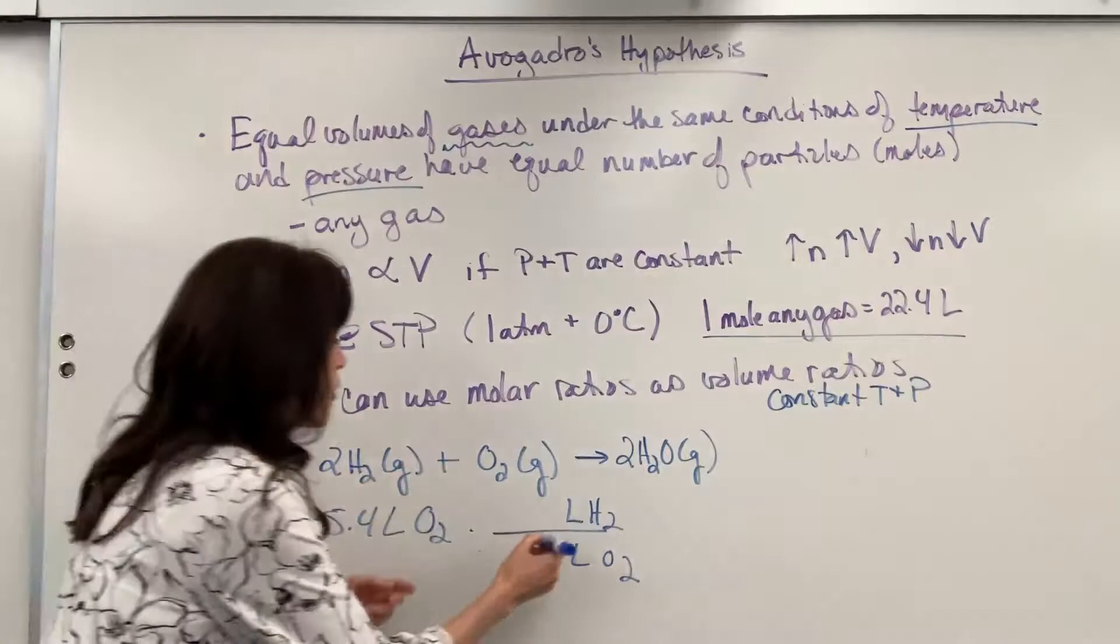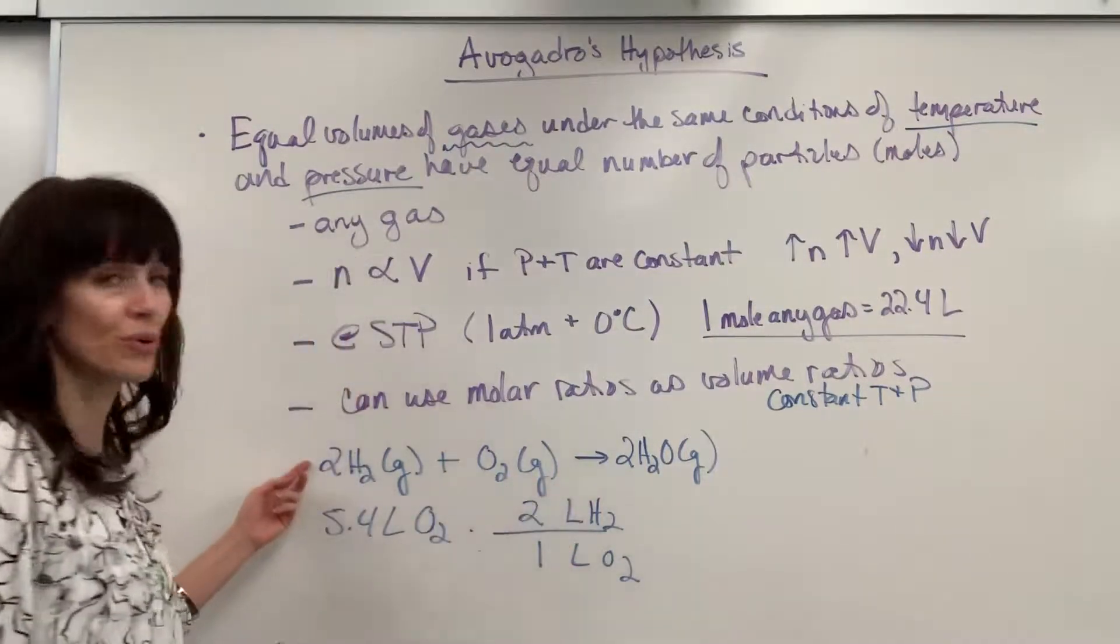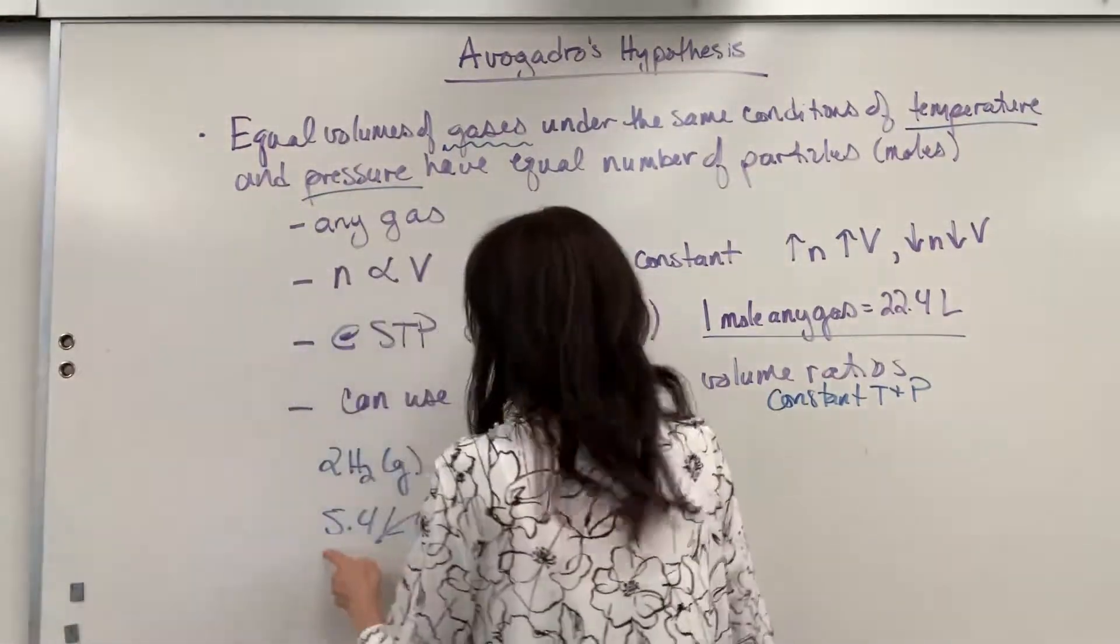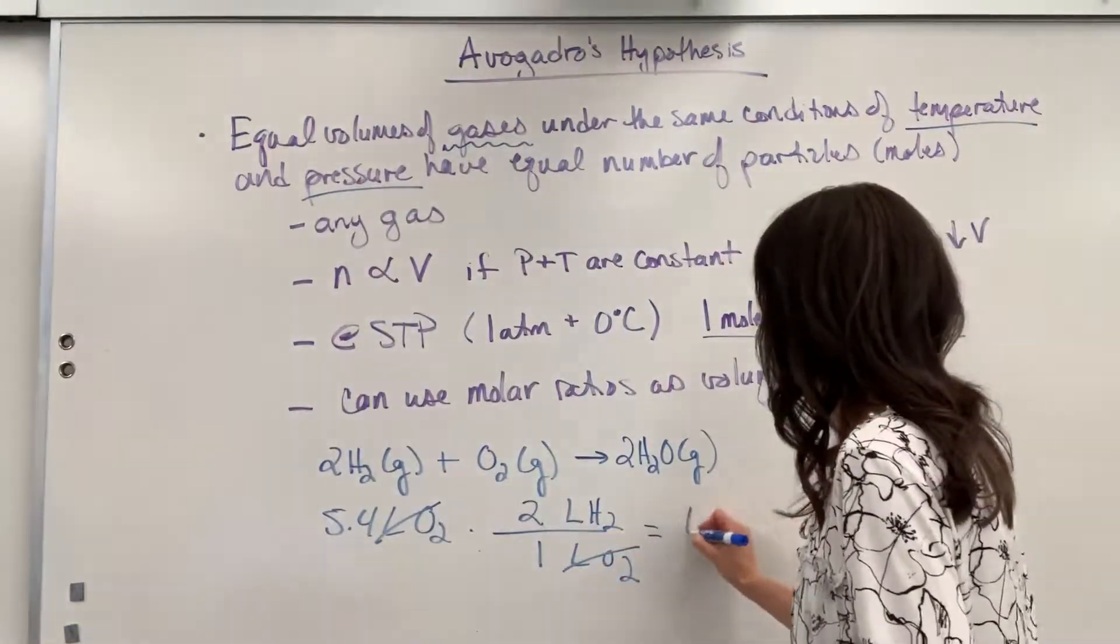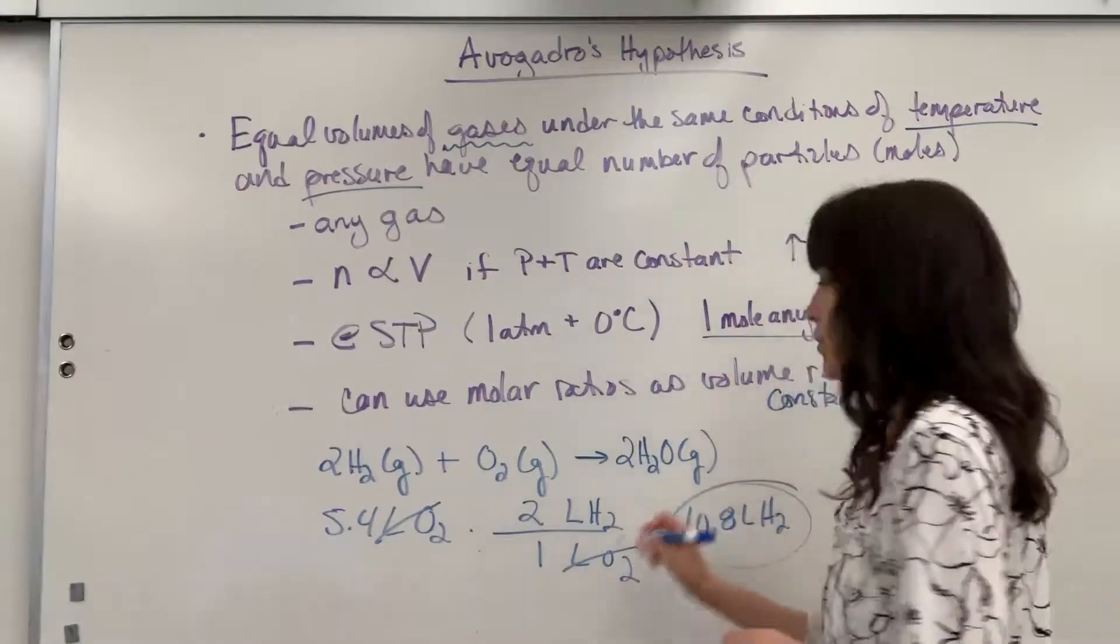So, we've got one liter of oxygen reacts with two liters of hydrogen. So, liters of oxygen cancels. 5.4 times 2 divided by 1. And that would give me 10.8 liters of hydrogen are required.